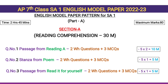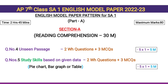Question No. 2 is a passage from Read It For Yourself — 5 questions, 5 × 1 = 5 marks. Question No. 3 is based on given data — Pie Chart, Bar Graph, or Table — with 5 questions below it, 5 × 1 = 5 marks.